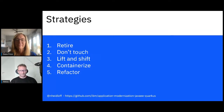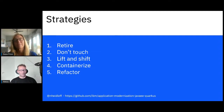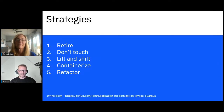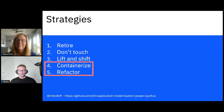Let's take a look at different strategies for how we can modernize applications — or not only how to modernize, but in general how to handle legacy applications. The first two strategies, retire and don't touch, don't really have anything to do with modernization. The third, lift and shift, means you move an existing application from a VM into the cloud, but you don't really gain any of the real cloud benefits. Cloud native means you want to leverage the unique capabilities of the cloud. That's why today I'm focusing on containerization and refactoring — number four and five.